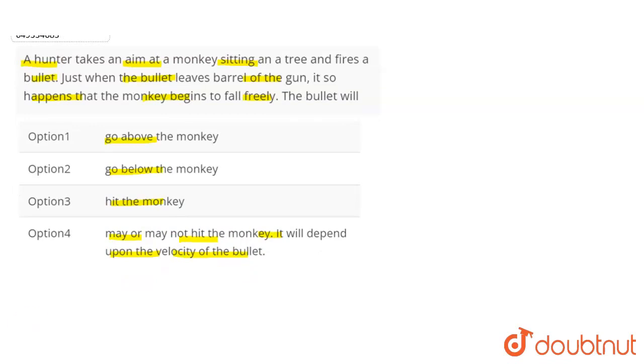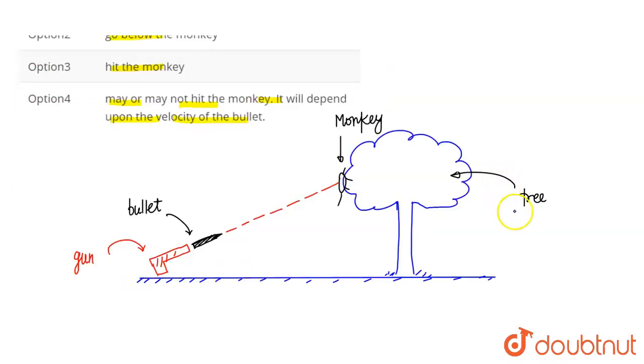So here we have to look at the diagram. Here is the tree on the ground, here is the hunter. Hunter wants to kill the monkey with the help of a gun. So hunter wants to kill the monkey directly and fires.